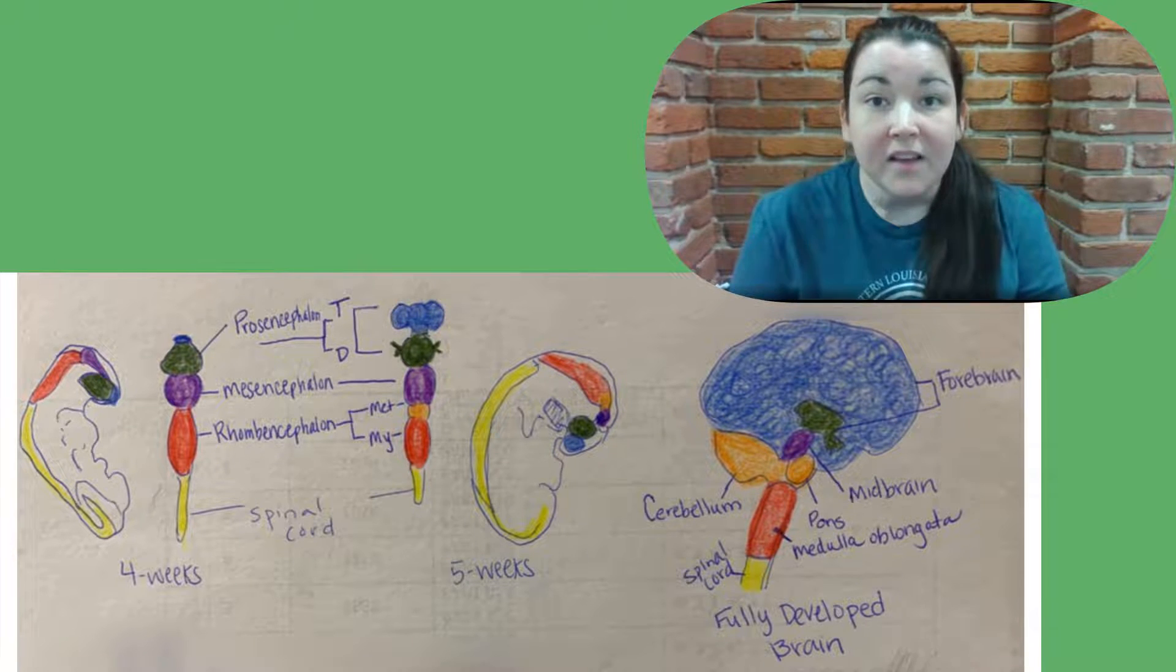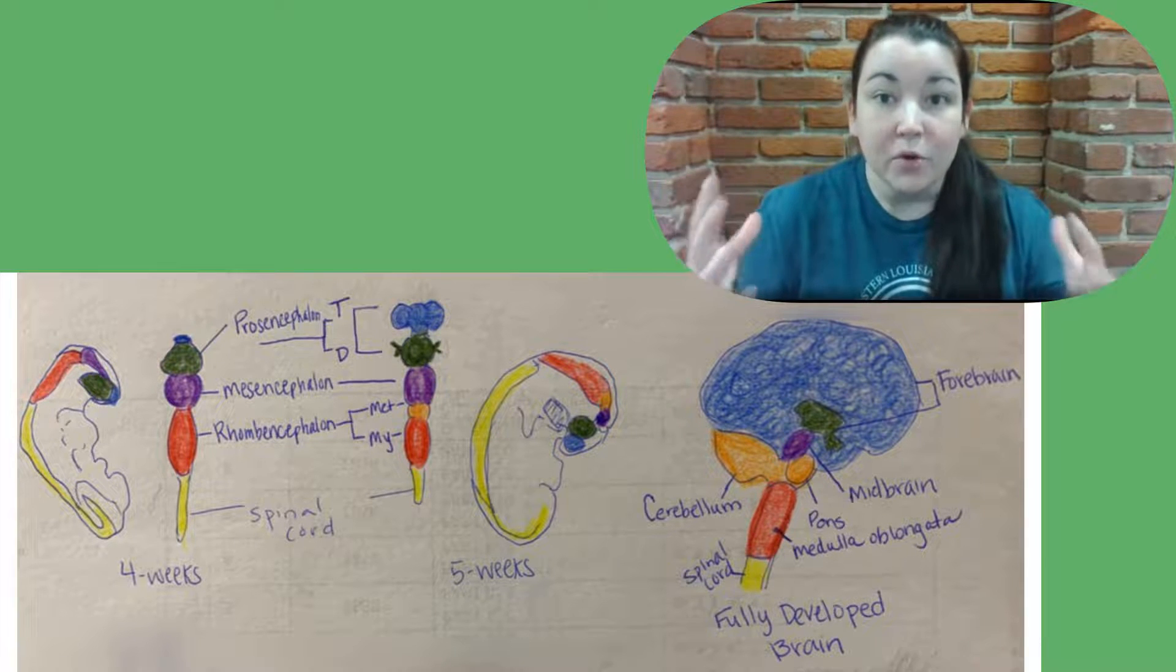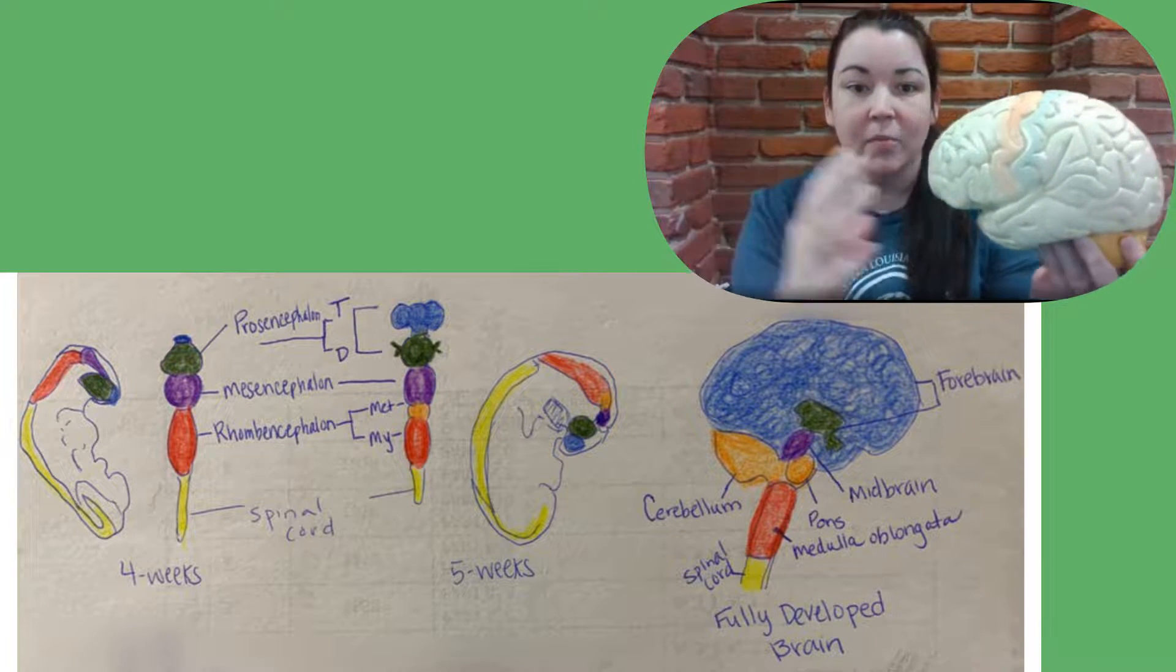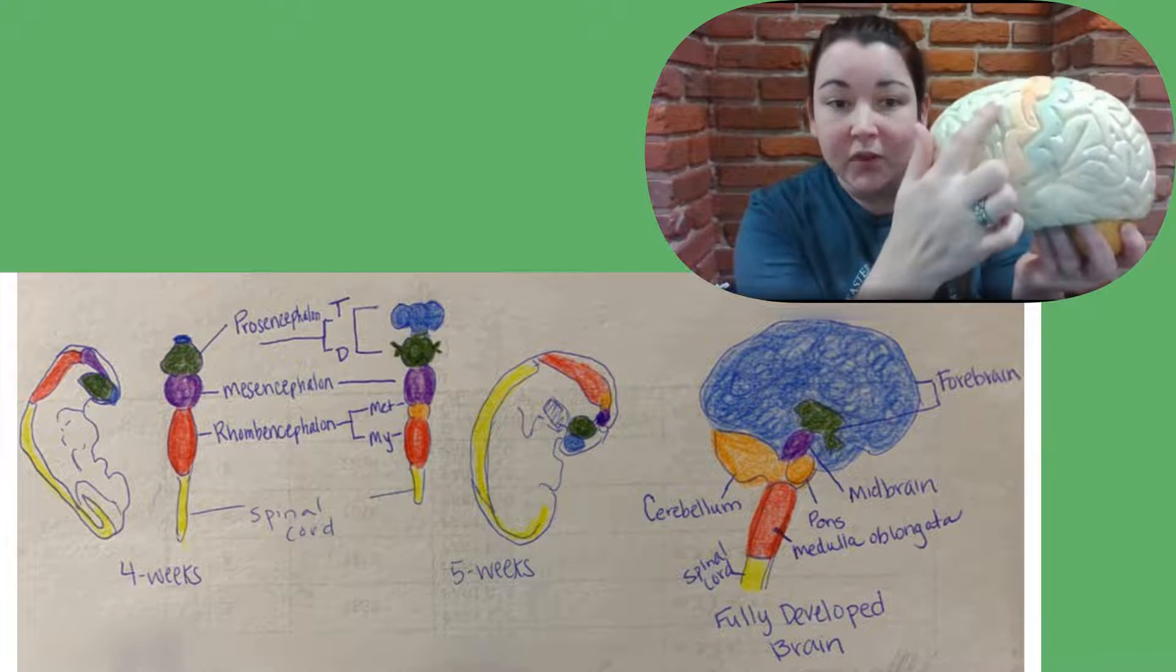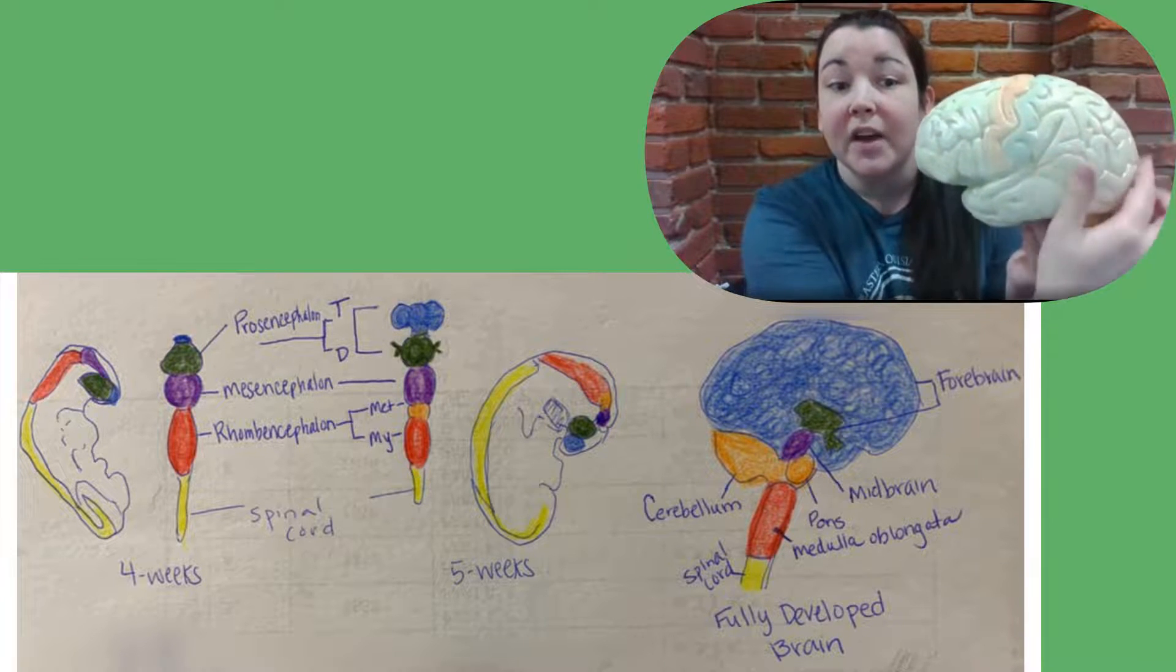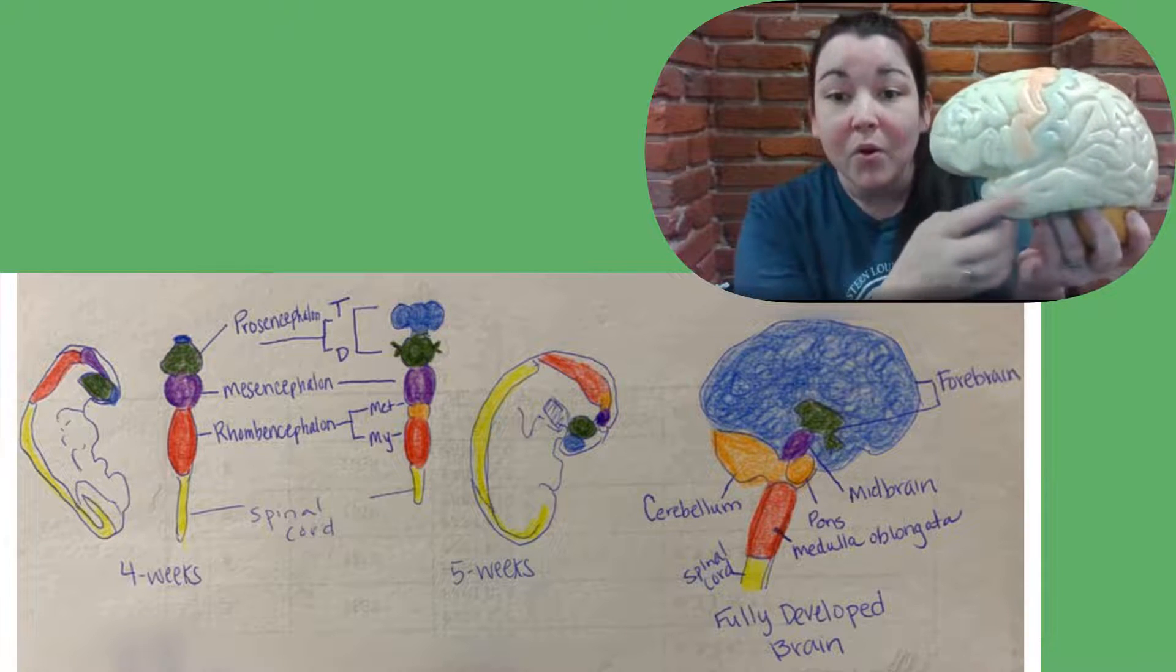The telencephalon forms your cerebrum. This is the bulk of the brain. When you think about the cerebrum, it's this portion here. It's going to form the frontal lobe, the parietal lobe, the occipital lobe, and the temporal lobe.